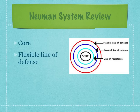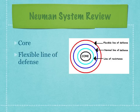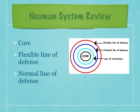Next is the flexible line of defense, which is the outermost boundary defense of the defined client system. It is a protective barrier for the client's normal line of defense or state of wellness. The normal line of defense is the level of health developed over time by a client or client system that is considered normal for that client — basically, it is a standard of wellness.